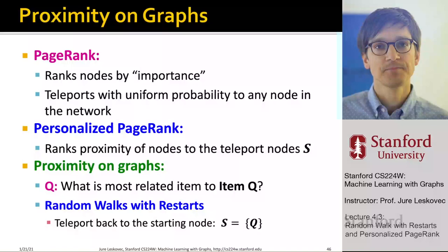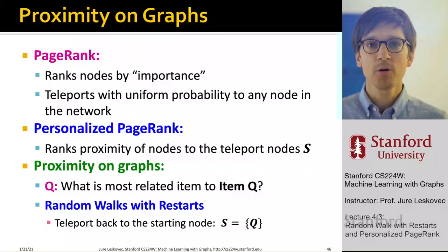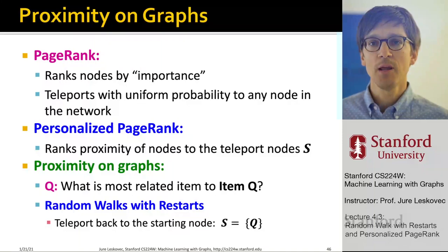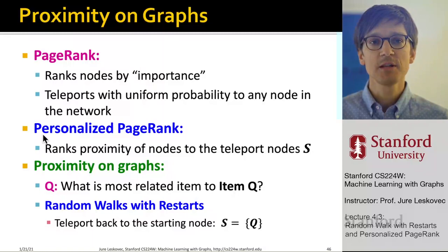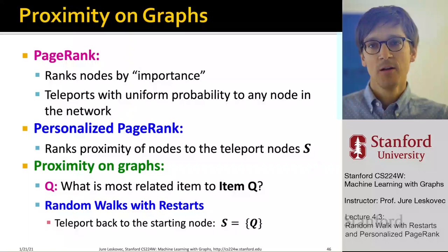This is where the extension of PageRank comes in. PageRank tells me the importance of a node on the graph and ranks nodes by importance. It has this notion of a teleport where a random surfer teleports uniformly to any node in the graph. Now we will define personalized PageRank, where the only difference is that whenever the random walker teleports, it doesn't teleport anywhere in the graph but only jumps back to a subset of nodes S.